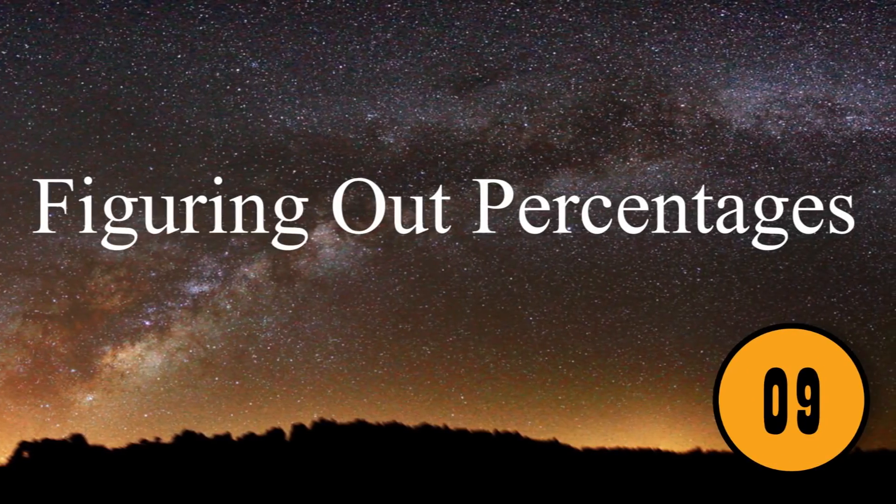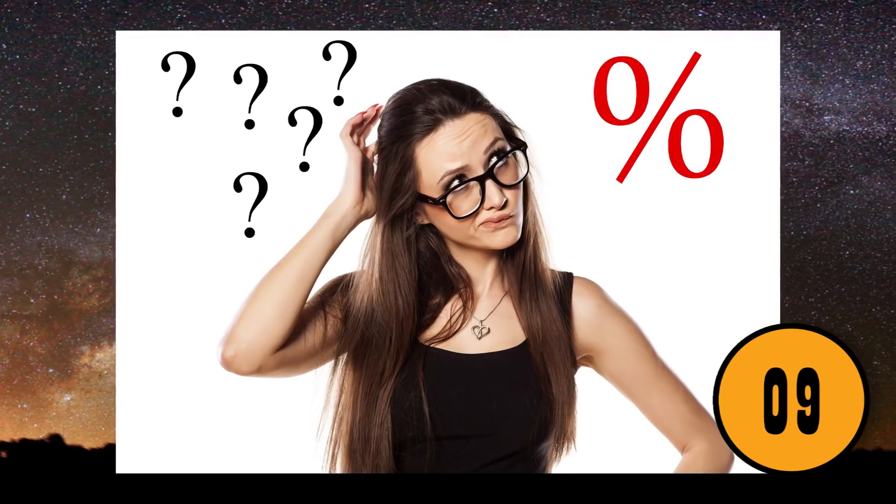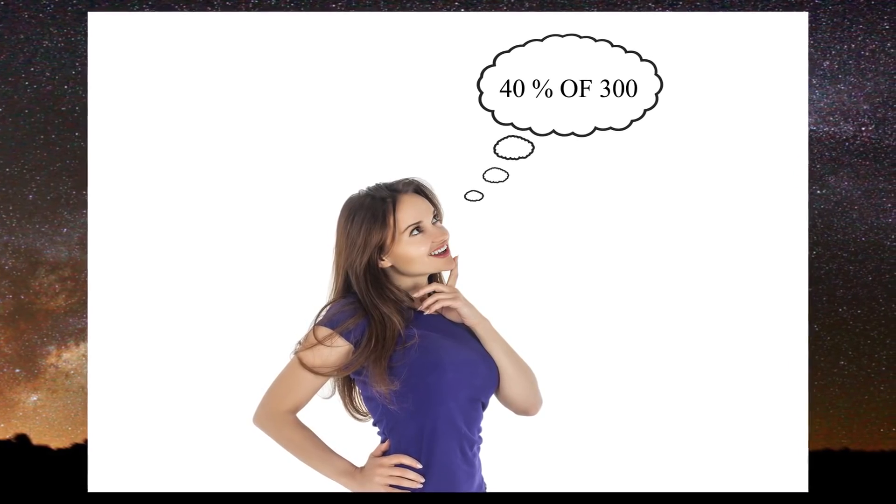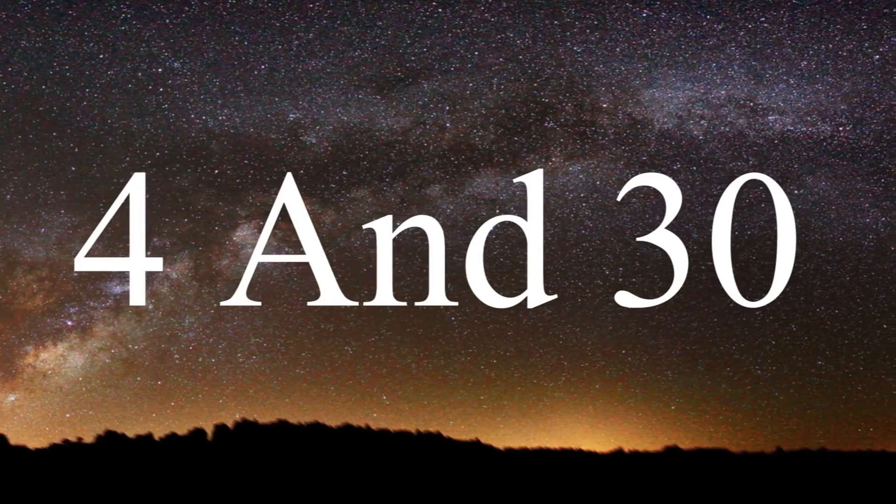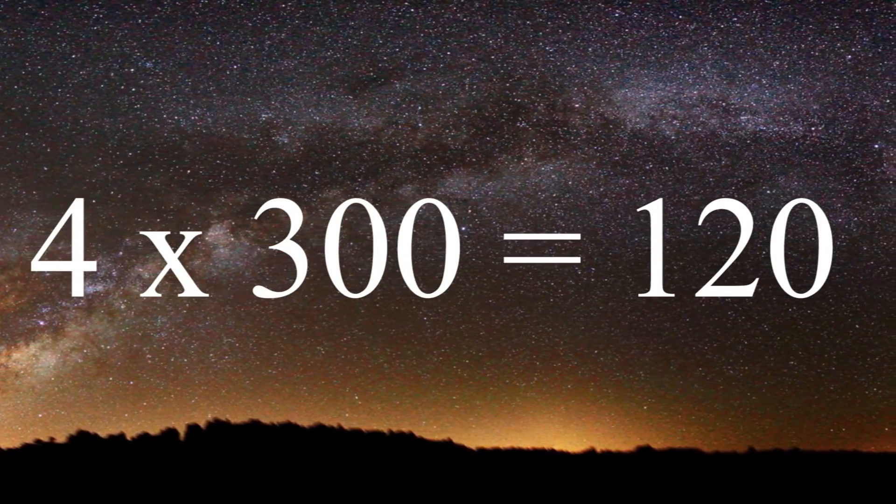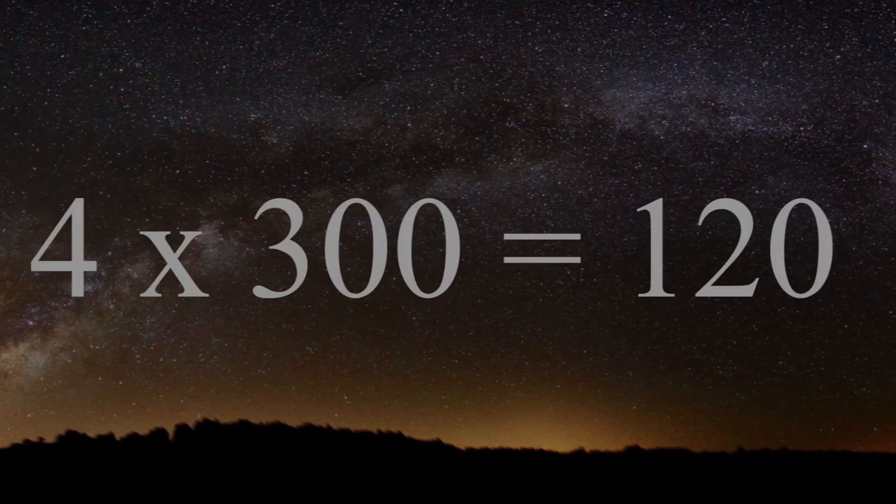Figuring Out Percentages. Figuring out percentages is not as difficult as you might think. You can easily figure out the answer in your head. If you want to figure out 40% of 300, you simply drop the last number of each number. So you just need to figure out 4 times 30, which is 120. It's that simple.